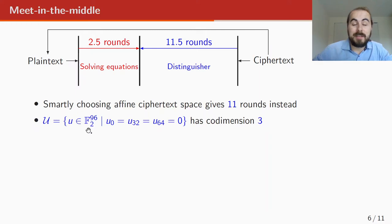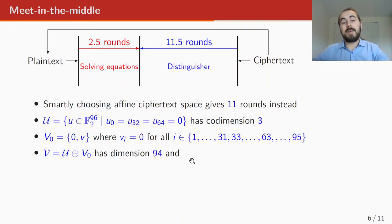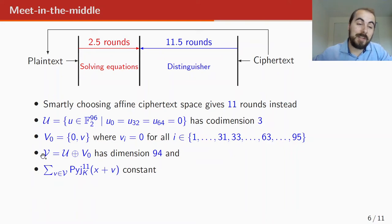If we take U to be the space where the first column is 0, and everything else can be whatever, then this is a space of dimension 93. Then we take a vector space of dimension 1, which is 0 in all positions except the first column. And the first column can be any vector except the 0 vector. And then we add these two vector spaces to get a vector space of dimension 94. And this is a vector space that helps us in getting constant values after 11 rounds of PYJAMASK. And that's because if you apply one round of PYJAMASK to this vector space V, then the result will also be an affine space. And then you basically have a decrease of 2, so therefore you can get to 11 rounds.